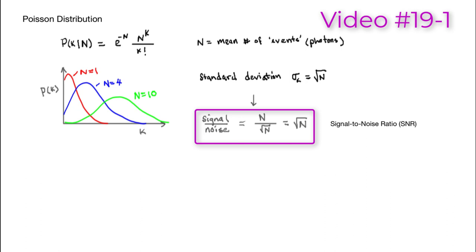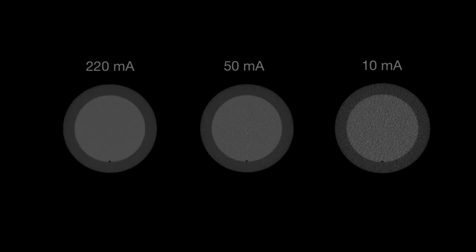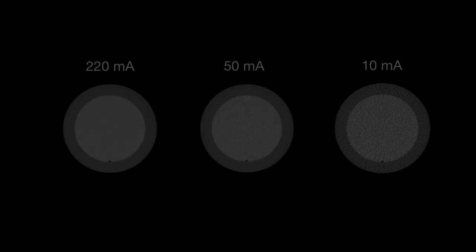Let's look at some phantom scans done at three different mA settings — the time is the same in each case. You just see that as the mA is lowered, the noise gets worse. mA controls the current in the tube, which controls the number of photons out. Noise is also affected by slice thickness.